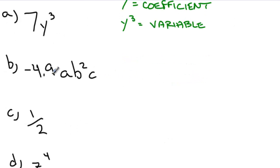My second example, -4.9ab²c. Negative 4.9 would be the coefficient. And, tricky one, the variable is ab²c.